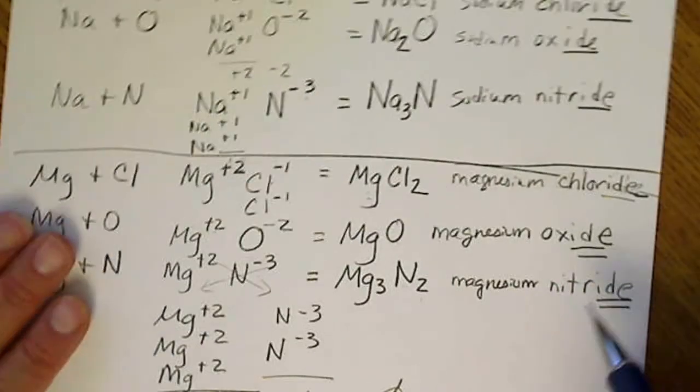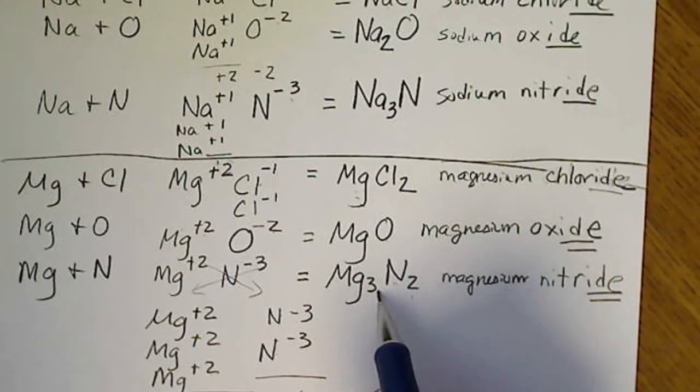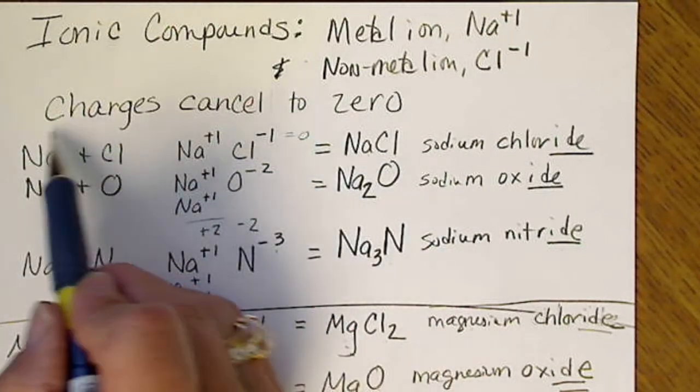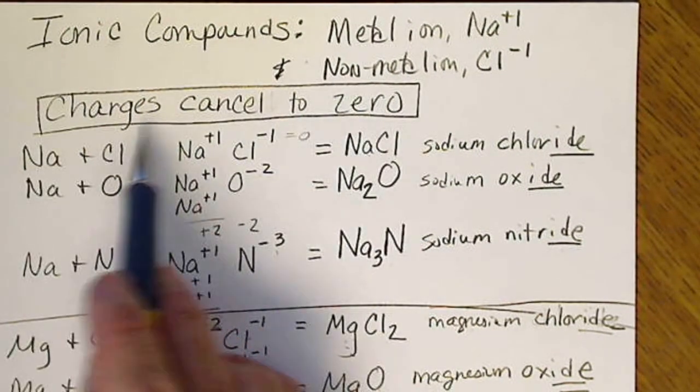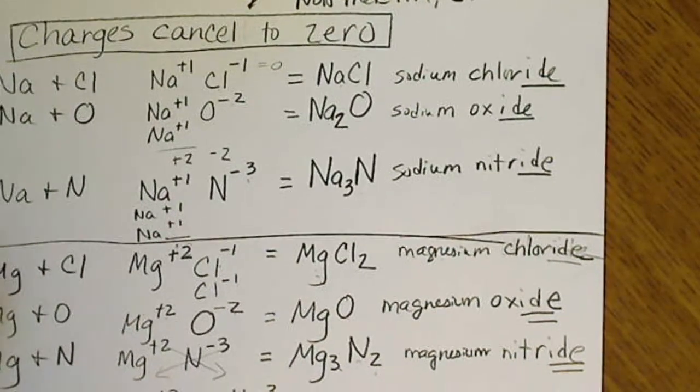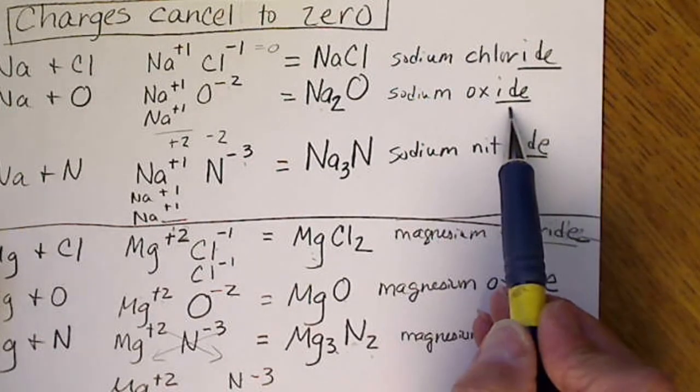So the names don't have anything to do with the formula. The formulas have everything to do with the charges. In fact, that is the most important thing for an ionic compound. The charges cancel to 0. So we're going to see that we have a very consistent naming system. We name the metal and we name the non-metal.